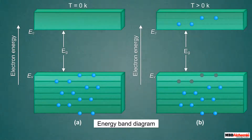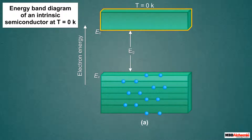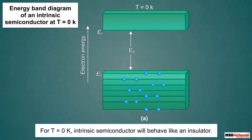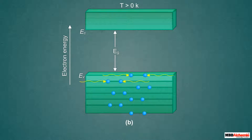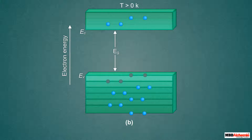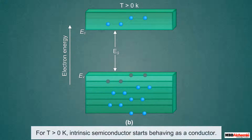Let us now understand the conductivity of an intrinsic semiconductor at two different temperatures using an energy band diagram. At a temperature of 0 kelvin, all electrons are in the valence band and the conduction band is empty — an intrinsic semiconductor behaves like an insulator at T = 0 K. For T greater than 0 kelvin, thermal energy excites some electrons from the valence band to the conduction band, partially occupying it and leaving an equal number of holes in the valence band. The free movement of electrons in the conduction band contributes to electrical conductivity, and the semiconductor starts behaving as a conductor.